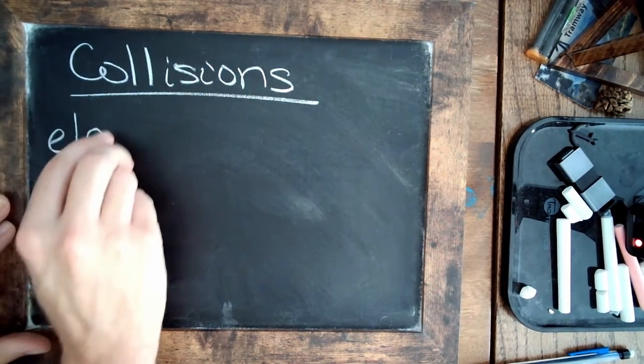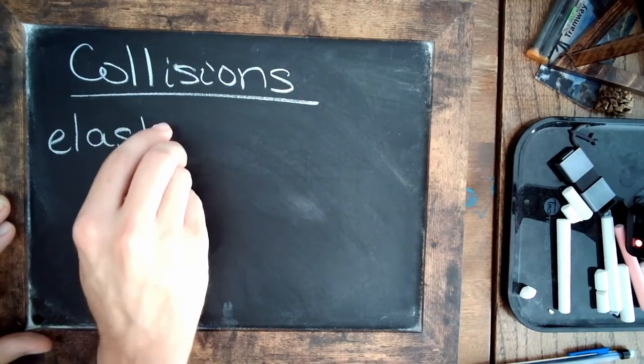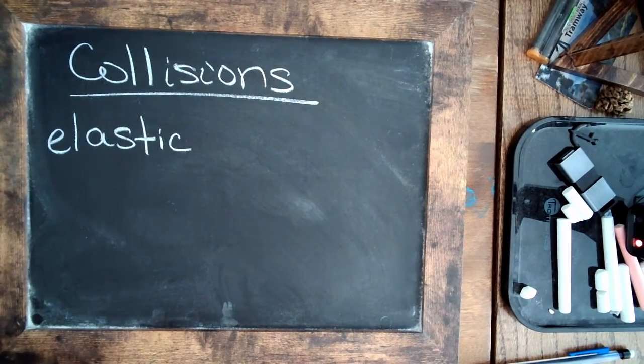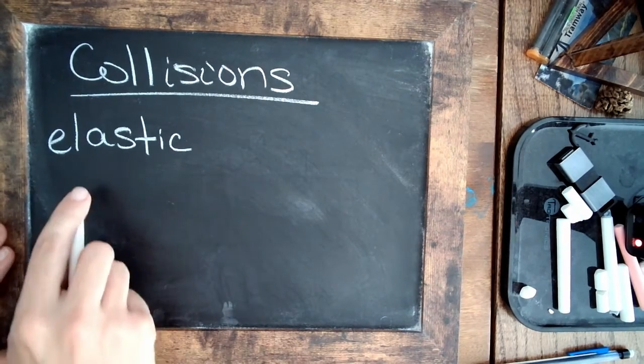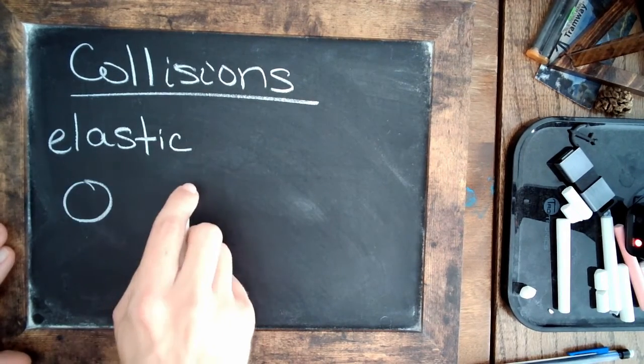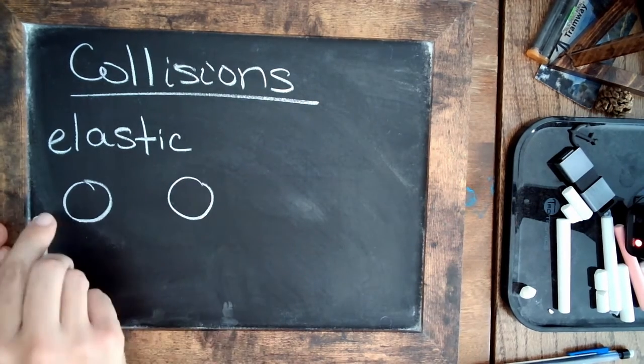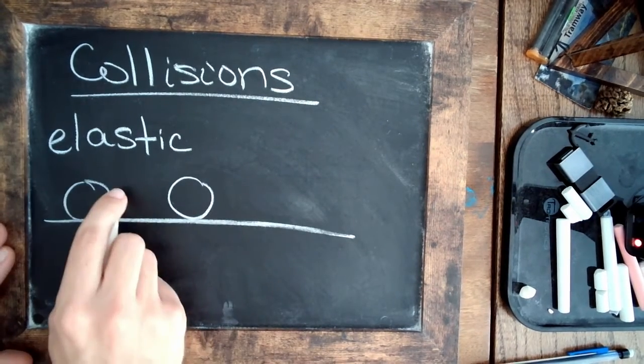So the first type is an ideal collision, which is called an elastic collision. It's very important in a lot of contexts, and a good example would be billiard balls, pool balls. So they're just hard, rigid objects, and if you smash one into the other,